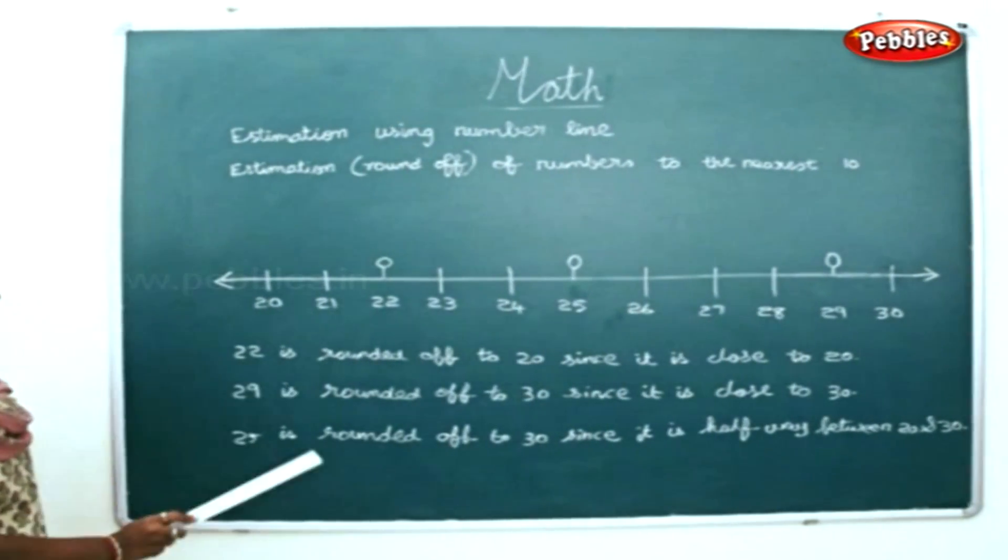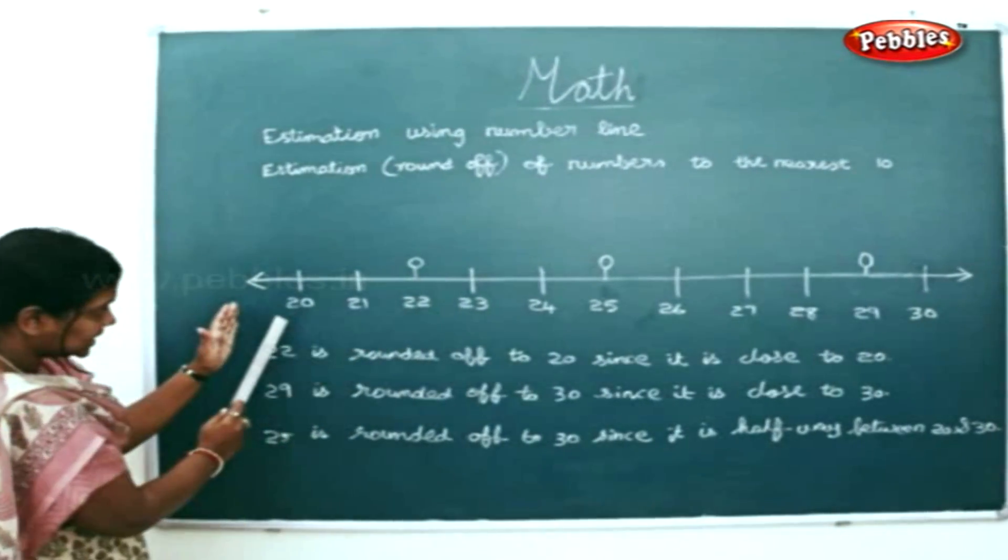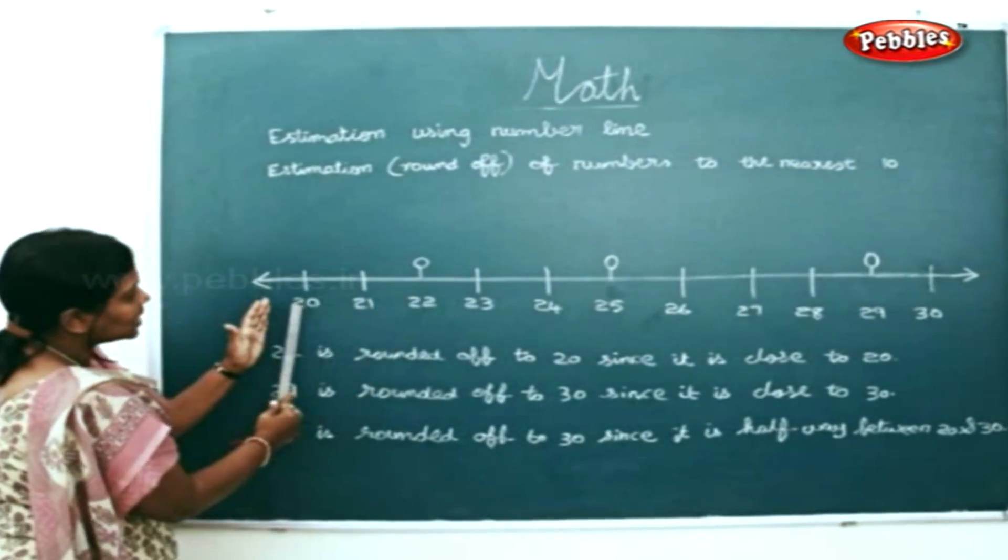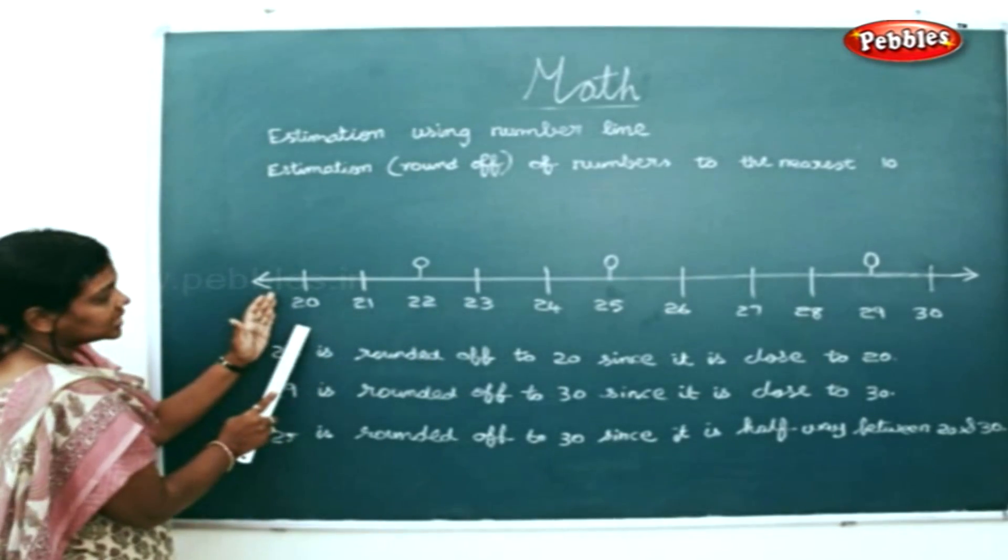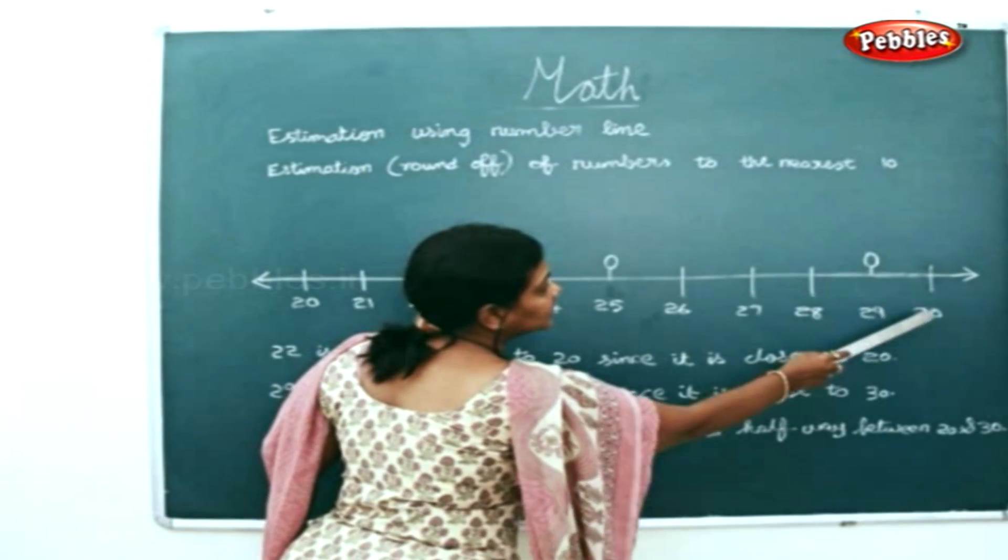Now 22 if you take is rounded off to 20 since it's close to 20. See this 22 is close to 20. Next 29 is close to 30.